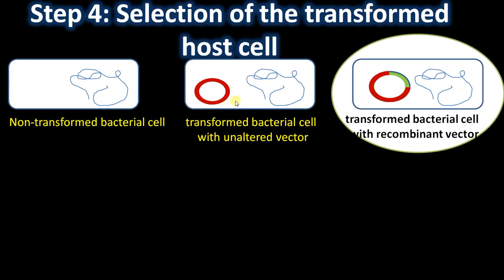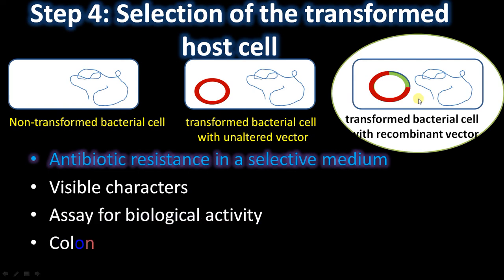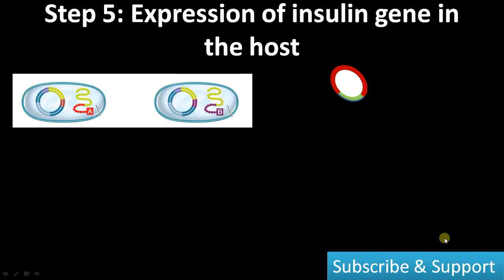The second step is to distinguish colonies transformed with the unaltered vector from those with the recombinant vector. Different methods include antibiotic resistance in selective medium, visible characters, biological activity assays, and colony hybridization or blotting tests. We have a dedicated five-minute video on the selection of transformed colonies — you can refer to that for more detail.